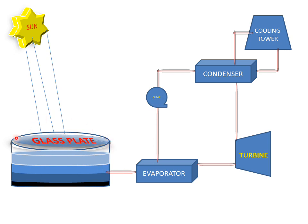So the solar pond is also used for electricity generation. The heated water is used for the evaporator, and the overall efficiency of the thermal power plant can be increased by using a solar pond. This is a solar pond — a very important system which uses sun radiation to produce heated water.